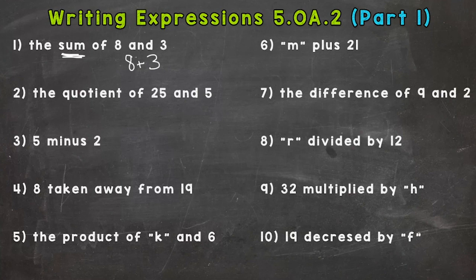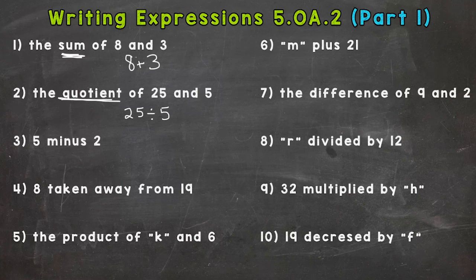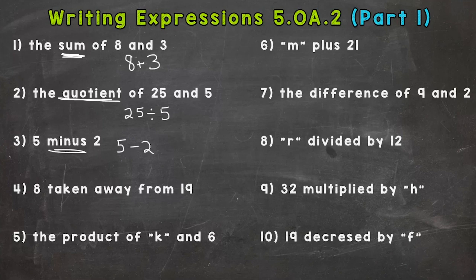Now these are pretty basic, but we have to get into good habits for when we get into more complex ones. So always double check your work. Number two: the quotient of 25 and 5. Quotient—do we remember that one? Hopefully you are thinking division, so 25 ÷ 5. Number three: 5 minus 2. Hopefully we are thinking 5 - 2.